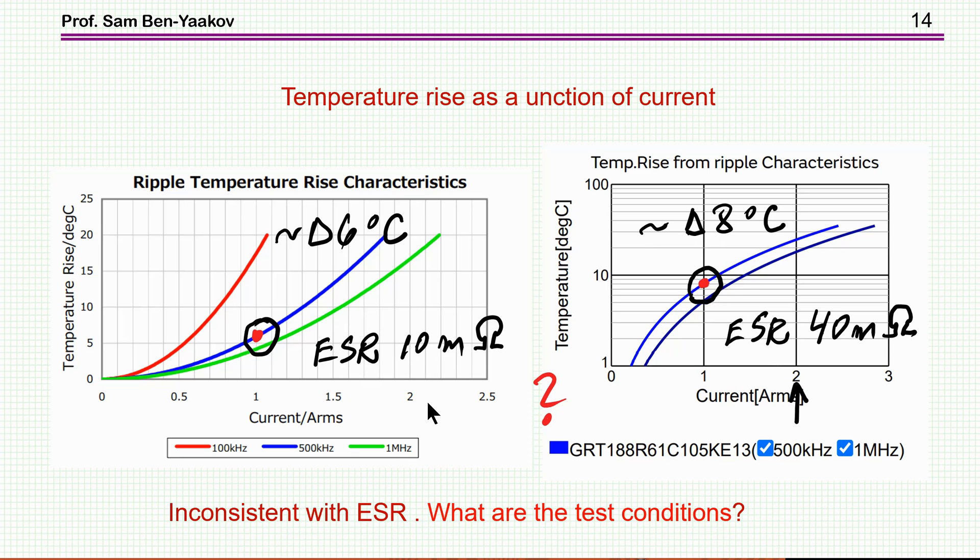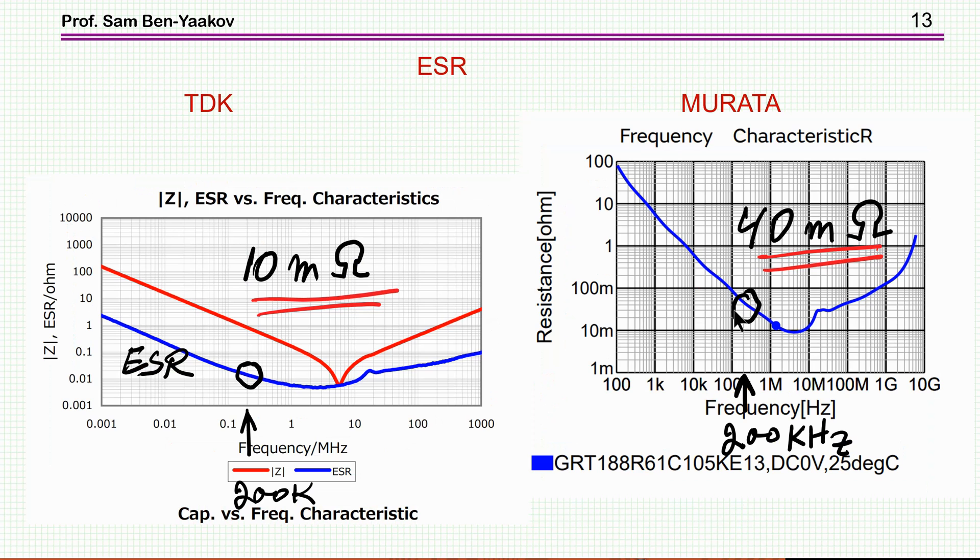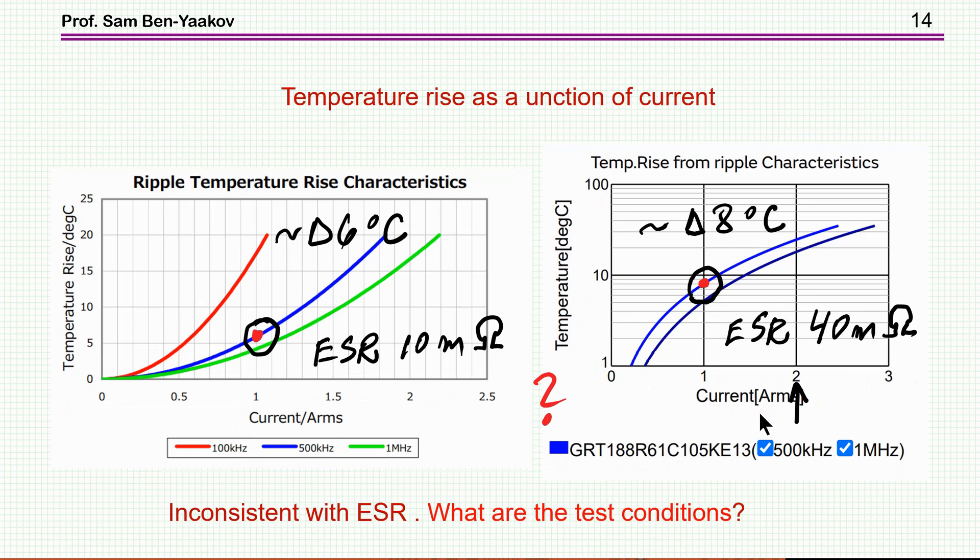Well, of course, it could be that maybe this is an error, and this is not the real number. Well, maybe. Or, more likely, the test condition for the two cases is different. That is, the temperature rise depends on the thermal conduction around the unit, the test unit, how much area do you have, how much copper area you have for thermal dissipation, for thermal conduction.